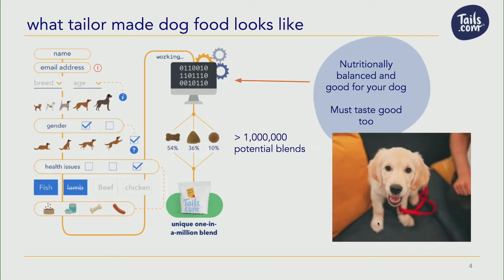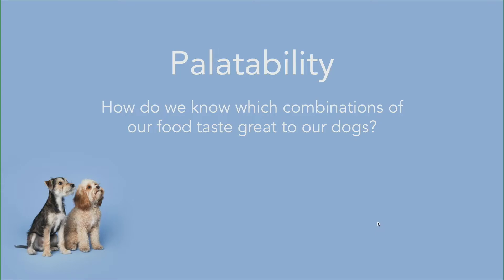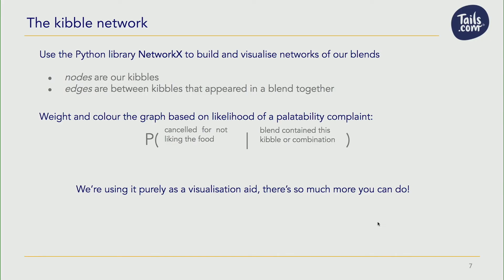Our algorithm has two main jobs. First, it's got to provide great nutritious food for our dogs, because that's what our customers expect. But as well as that, it's got to provide tasty food, because if the dogs don't like eating the food, the customer's not going to reorder, and there's no point in all the great nutrition work we've put in to get your food to your door. This is called palatability in dog food circles — basically, how do we know that the food we're sending out each month tastes good to your dog?